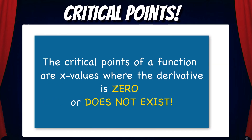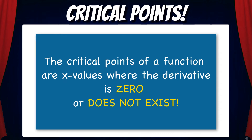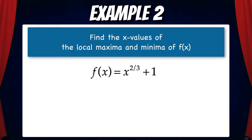Before we do another example, let's first review the idea of critical points. Remember, the critical points of a function are x values where the derivative is zero or does not exist. Keeping that in mind, let's do example 2: Find the x values of the local maxima and minima of f, where f equals x to the two-thirds plus 1.